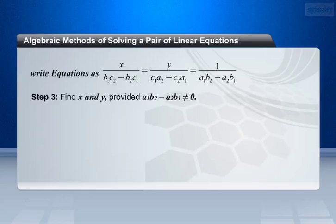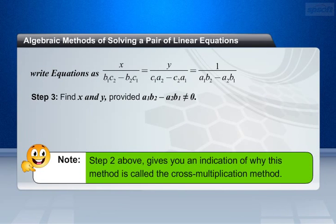Step 3: Find x and y values, provided a1 b2 minus a2 b1 not equal to 0. Please note that step 2 above gives you an indication of why this method is called the cross multiplication method.